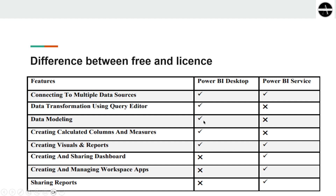Third is data modeling, which is available in Power BI Desktop but not in Power BI Service. Data modeling means connecting different tables or creating relationships between tables. Fourth is creating calculated columns and measures — using DAX we can create calculated columns and measures in Desktop, but we can't create them in Power BI Service.